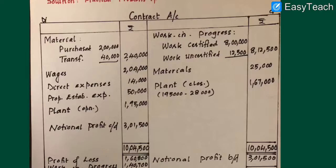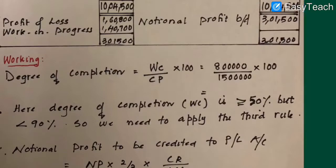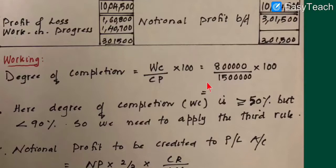First, we need to find the degree of completion. The formula is: Work Certified divided by Contract Price, times 100. Work certified is 8 lakh, and the contract price is 15 lakh. This gives us 53.3 percent — so approximately 53.8% of the contract is completed.